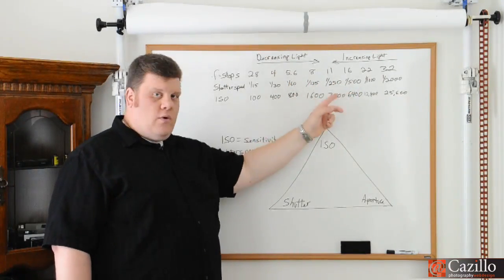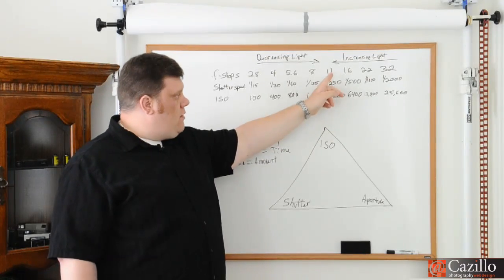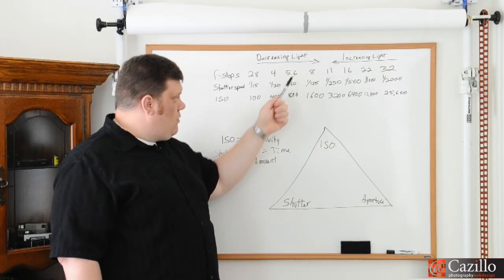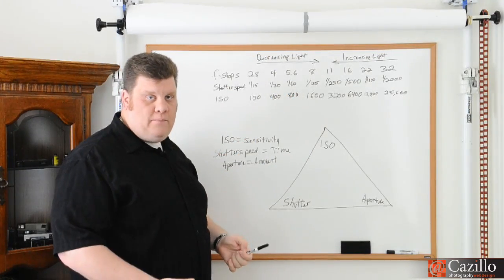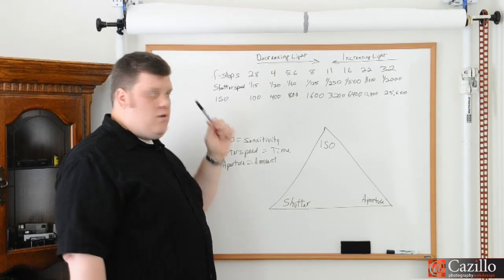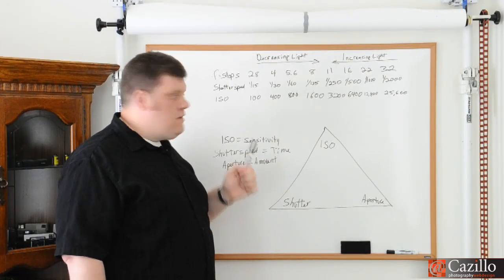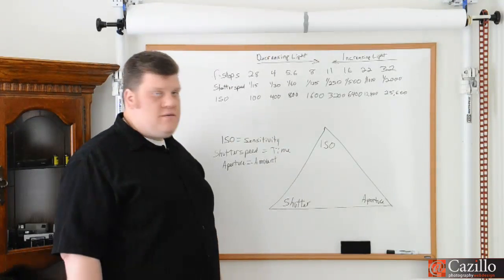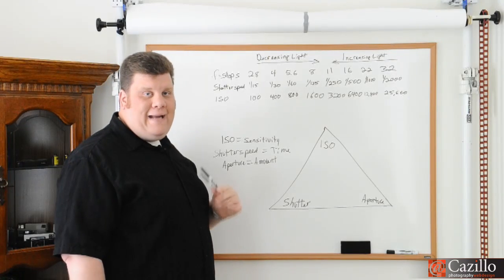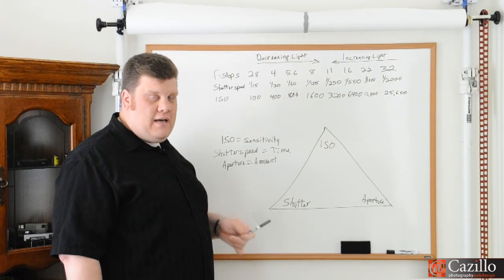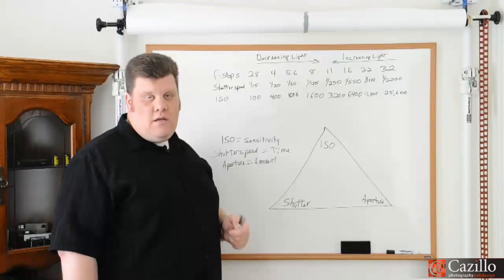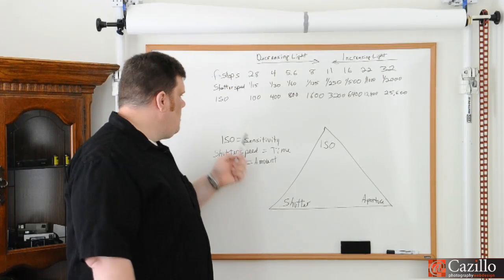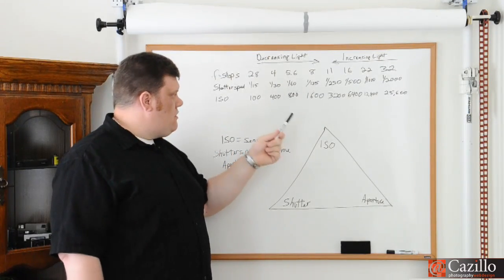And going the other way, we're doubling the amount of light. So when we go from F11 to F8, that means we're doubling the amount of light. And then again, when we go from F8 to F5.6, we're doubling it again. Shutter speeds work the exact same way in our primary settings. From 1/15 of a second all the way to 1/2000 of a second. And some cameras will even go up to 1/8000 of a second, maybe even higher. I think my D3 and D3S go up to 1/8000 of a second.